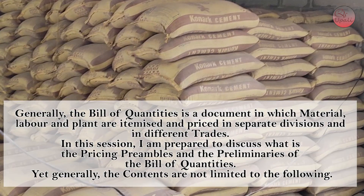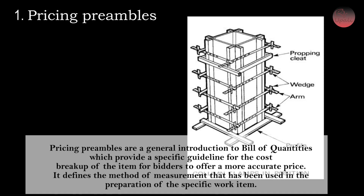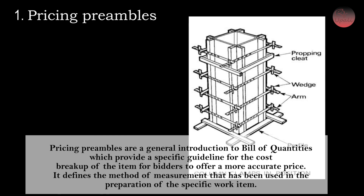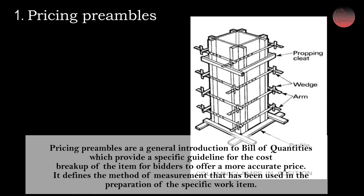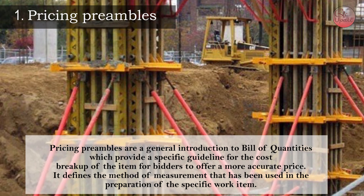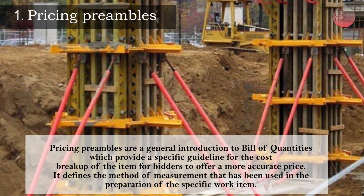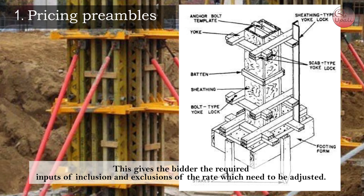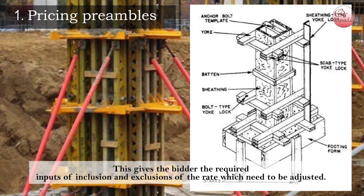Generally, the contents are not limited to the following. First, Pricing Preamble. Pricing preambles are a general introduction to the Bill of Quantities which provide specific guidelines for the cost breakup of items for bidders to offer a more accurate price. It defines the method of measurement used in the preparation of the specific work item. This gives the bidder the required inputs of inclusion and exclusion of the rate which need to be adjusted.